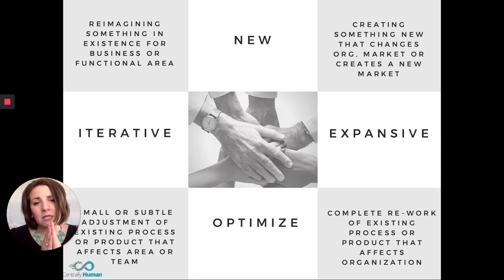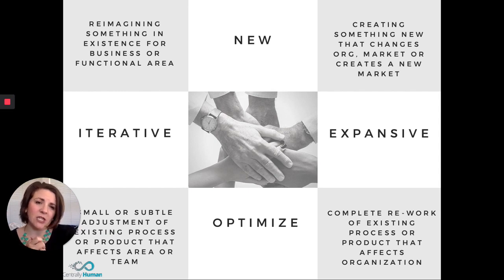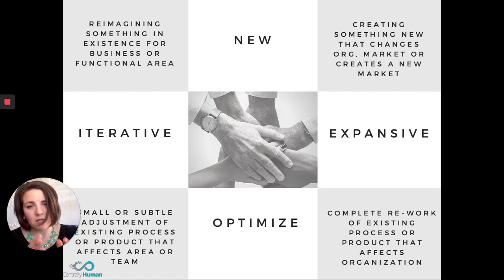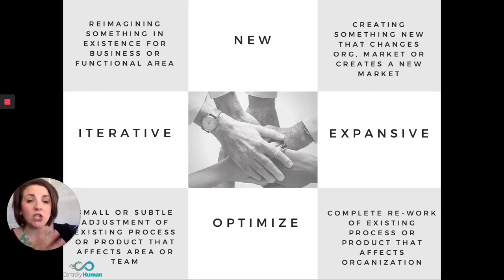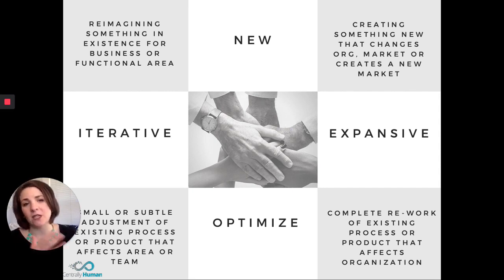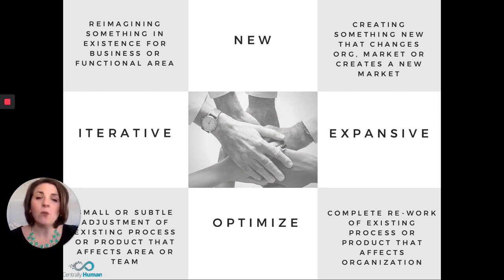Expansive and optimized — something in this quadrant would be a complete reworking of an existing process or product that affects an organization. The idea of an agile workflow versus a waterfall workflow could fit here. Waterfall is a way of doing business, a way of getting a project done. Agile is a different means to the same end. It has wide-ranging effects — it completely changes the way products, companies, and people exist. It's global, it's created whole new practice areas, job descriptions, and courses in school, and yet we're just optimizing a different way to go from point A to point B.